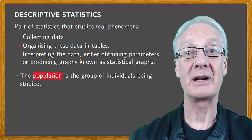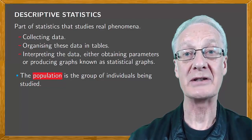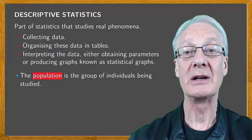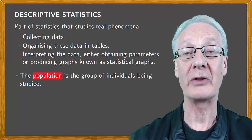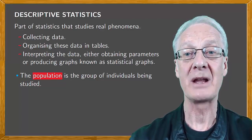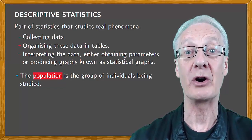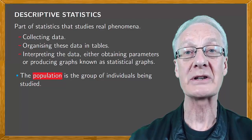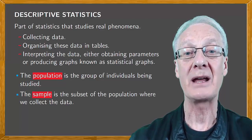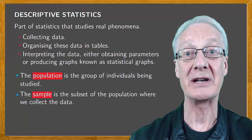Sometimes the population is very large and then it's difficult or even impossible to obtain data on all the elements of the population. In this case we select a subset of the population that's representative of everyone. We call this subset the sample and it's what we use to collect the data.